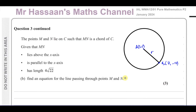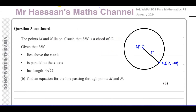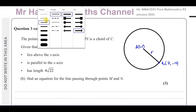Now for part B of question number 3, we are told about the points M and N which lie on C such that MN is a chord of C. MN is above the x-axis. The x-axis would be somewhere down here — since B is at (8,-7), the x-axis would be somewhere over here.